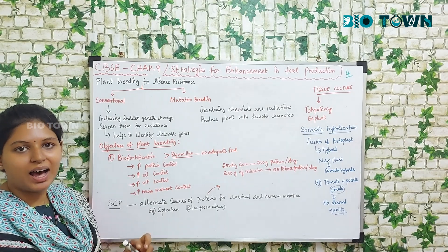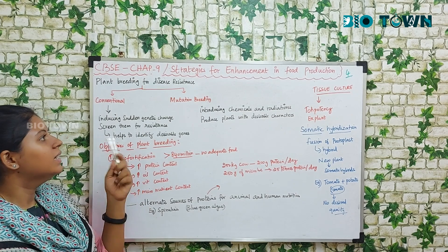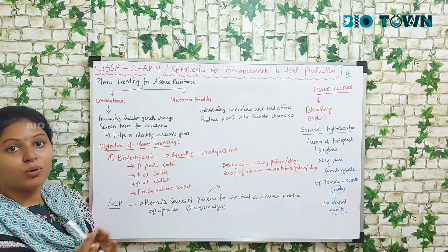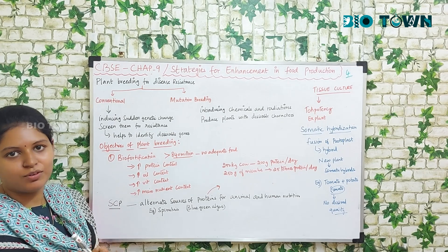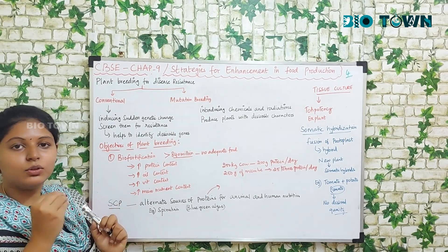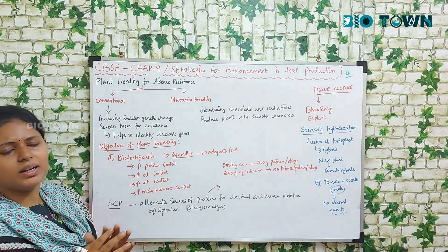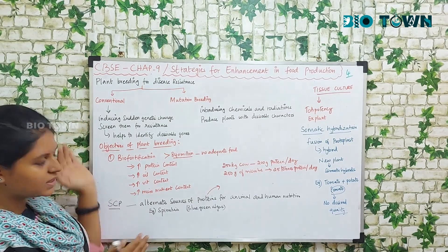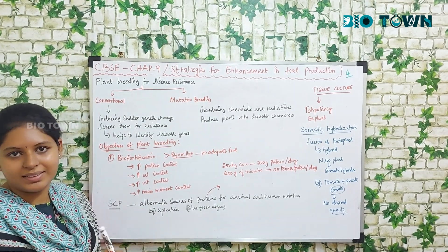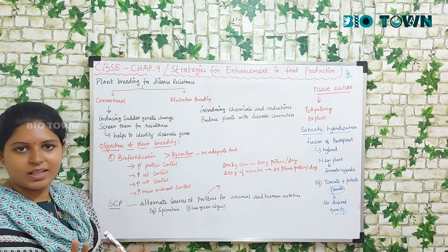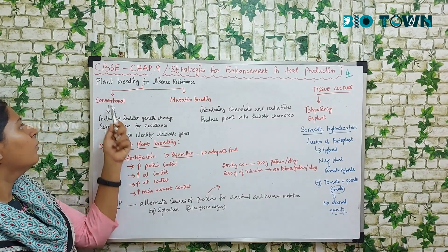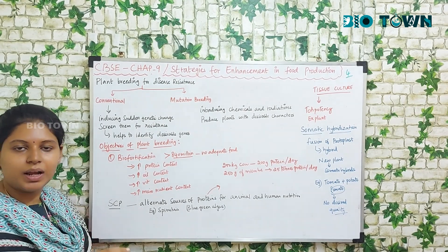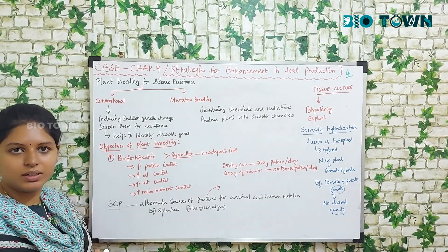Hello friends, we have come to the last part of this chapter: strategies for enhancement in food production. Hope this chapter was very much helpful for you all, so we'll just wind up. You might find there are so many contents from plant breeding, but don't worry — only this much is the content. They have elaborated it with a lot of examples in your textbooks. So first we'll talk about plant breeding for disease resistance.